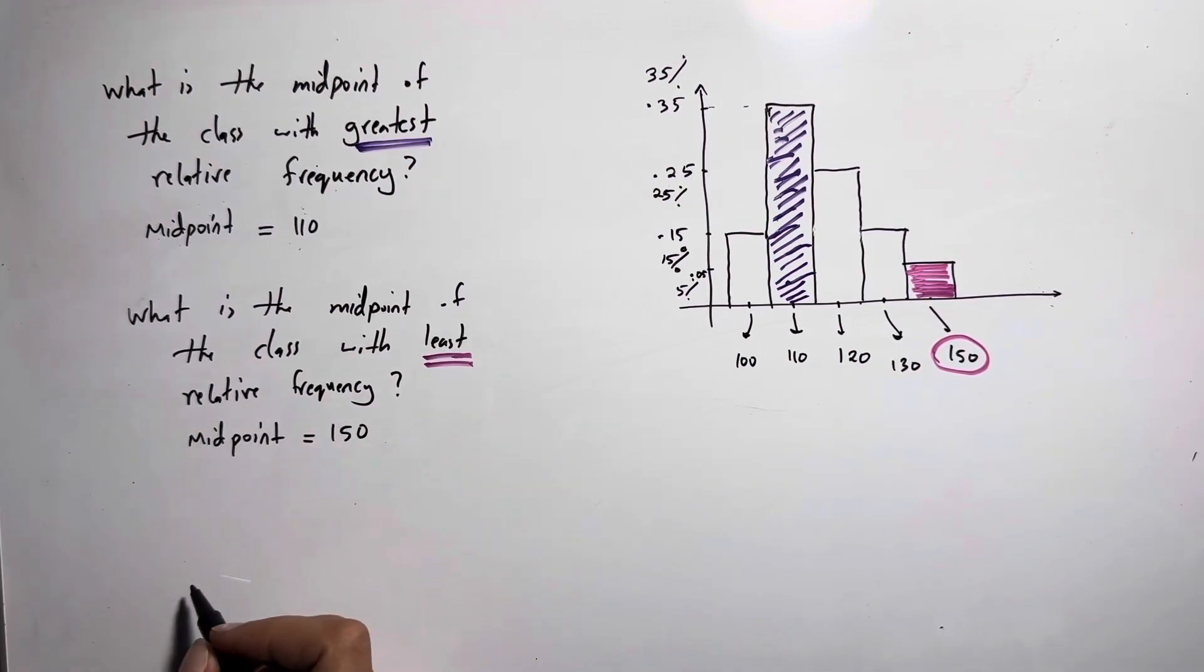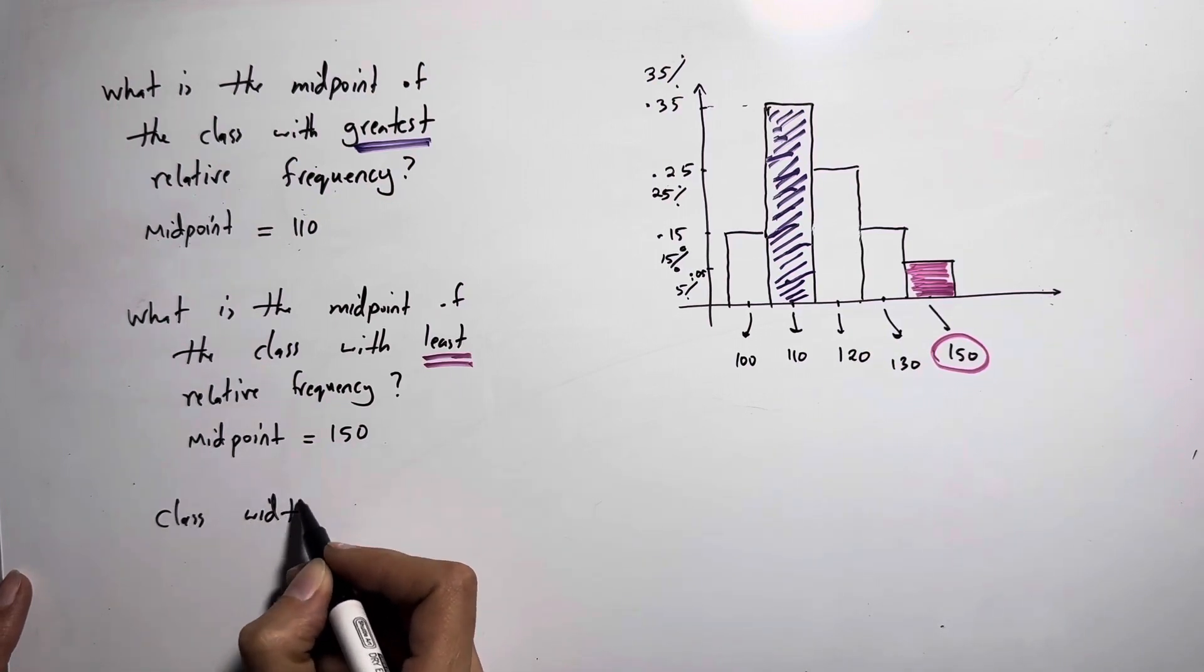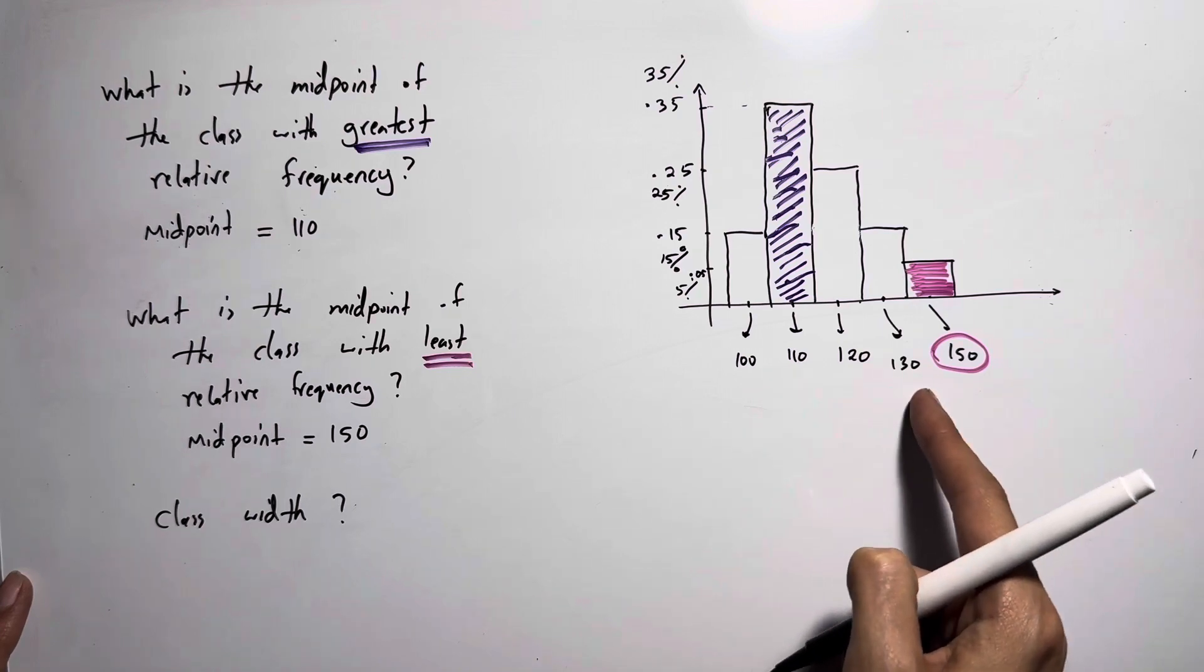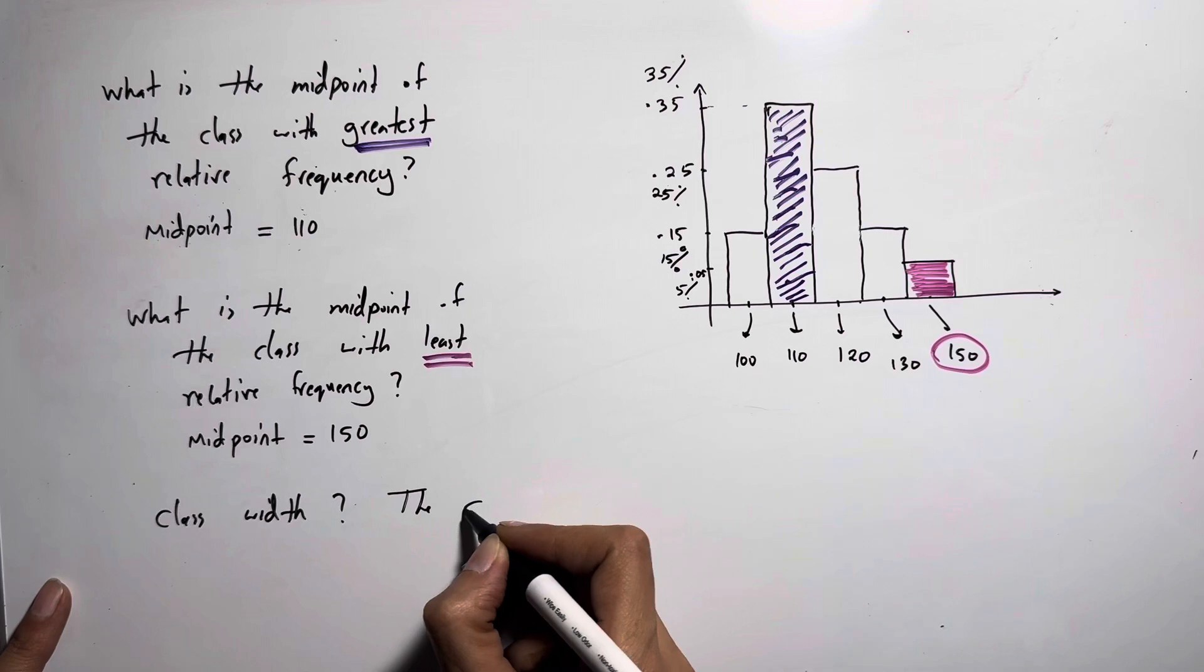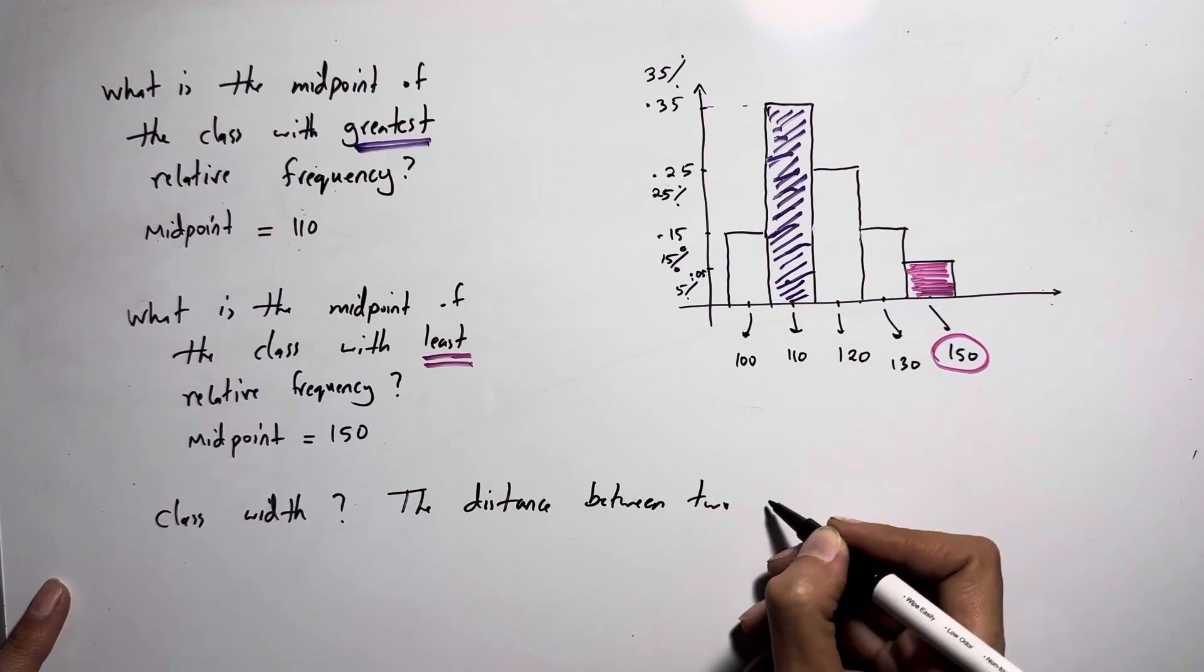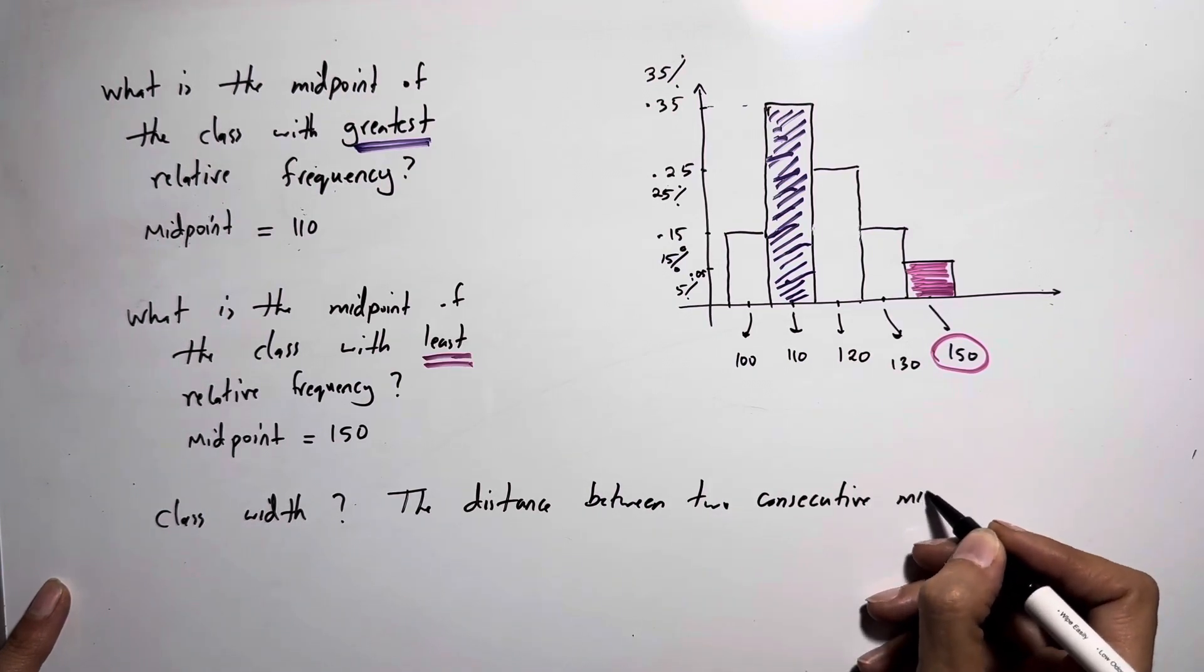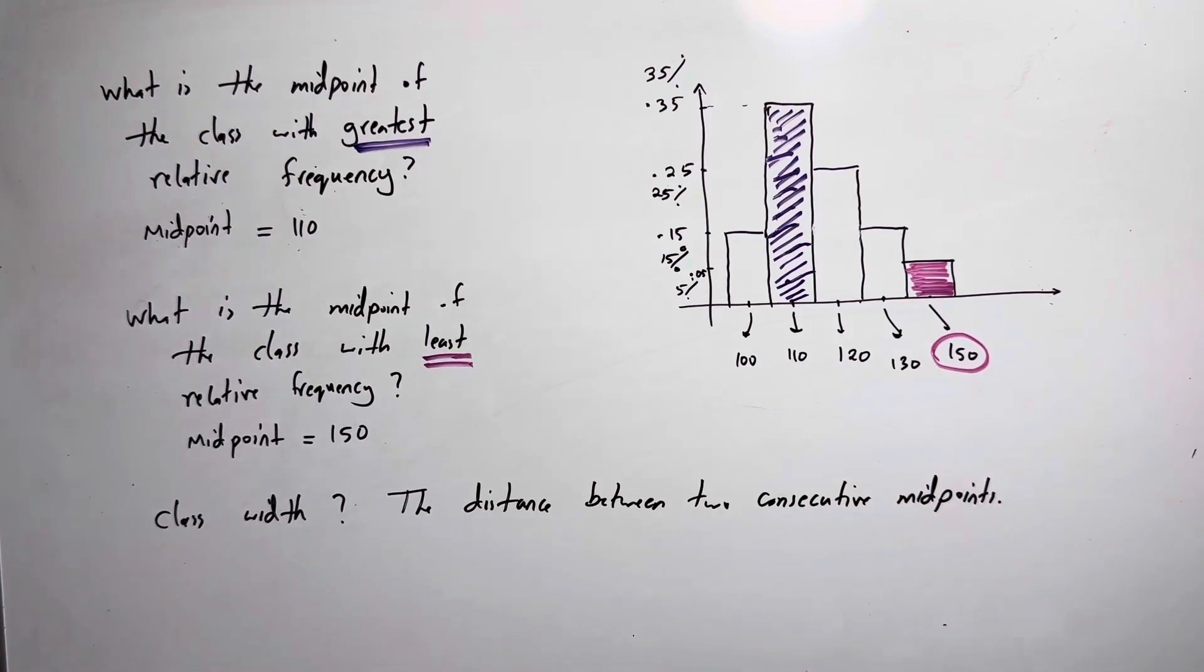Now what if I ask you to find the class width? The class width is the difference between two consecutive midpoints. It's the distance between two consecutive midpoints. Well, take a look at the distance between these.